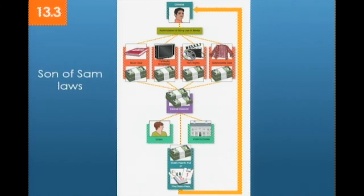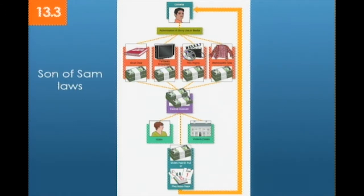Movies and television shows frequently discuss sensational true crimes, but the money from that will not go to the perpetrator. There could be book deals, TV and radio broadcasts, film rights, memorabilia sales — all making a lot of money. Son of Sam laws place this money in an escrow account and distribute it to the victim or the victim's estate. Basically, perpetrators cannot make a fortune from their criminal behavior.